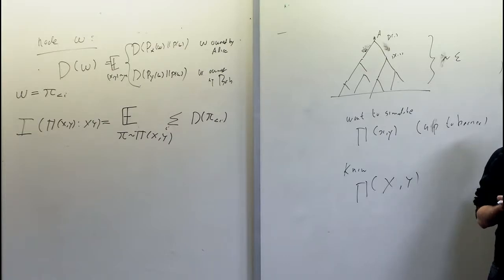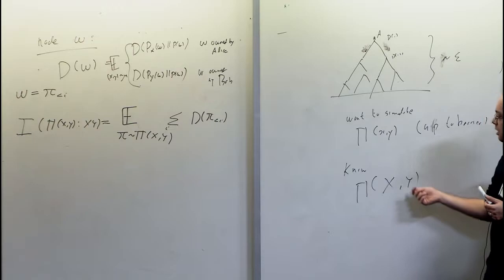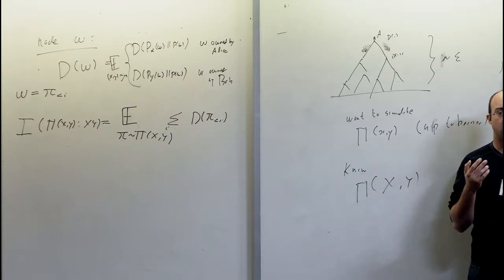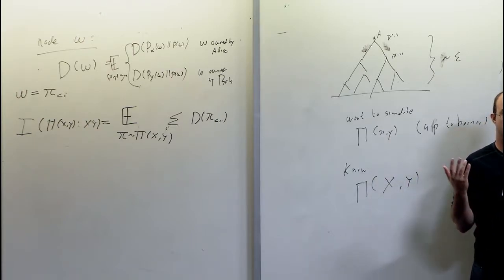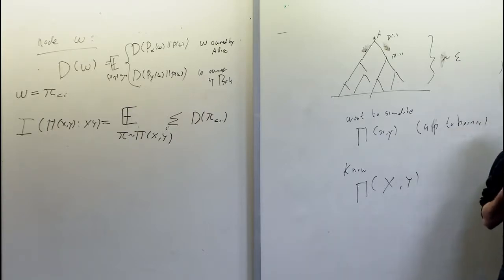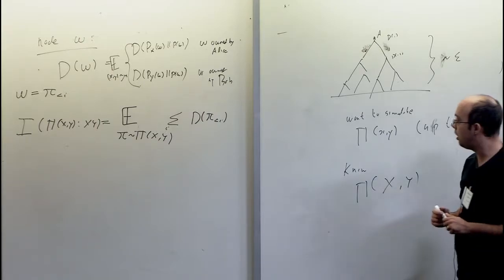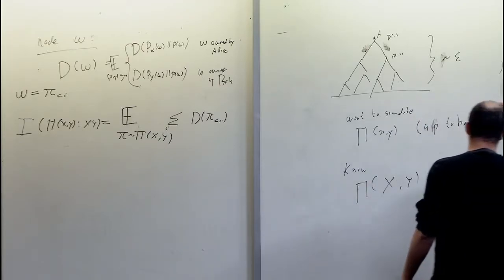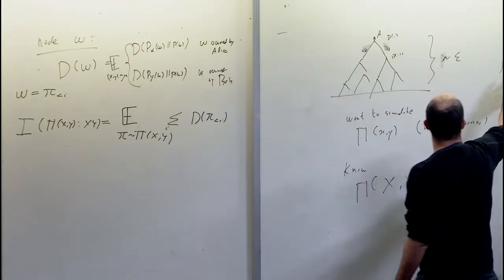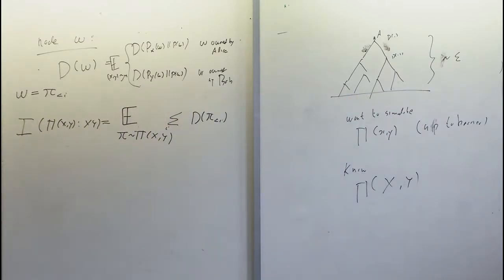The naive thing is to just use the observer distribution and assume we're in that distribution. But this accumulates error. A very nice way to correct this is to use rejection sampling.